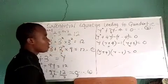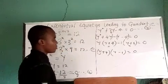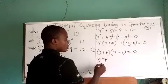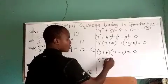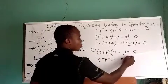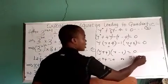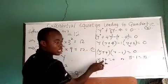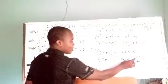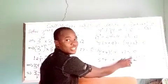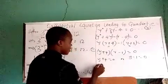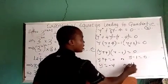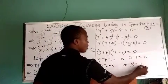From here we have y + 4 = 0 or y − 1 = 0. Solving each gives y = −4 or y = 1.